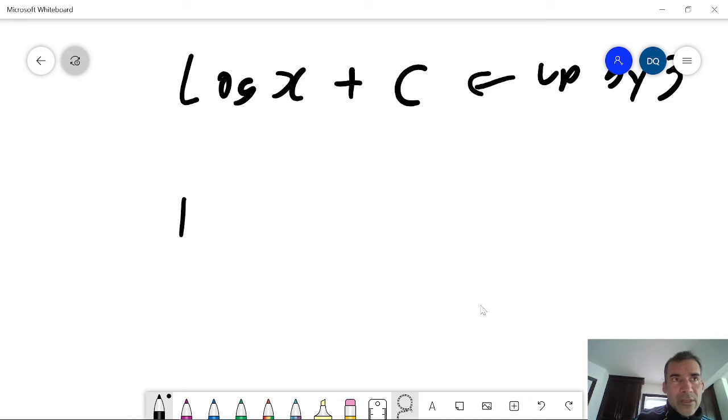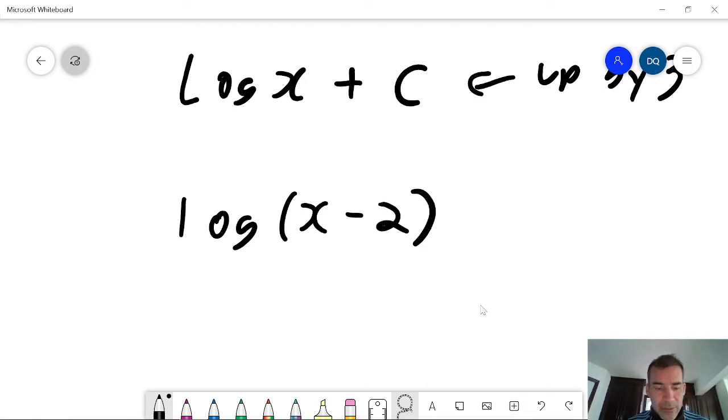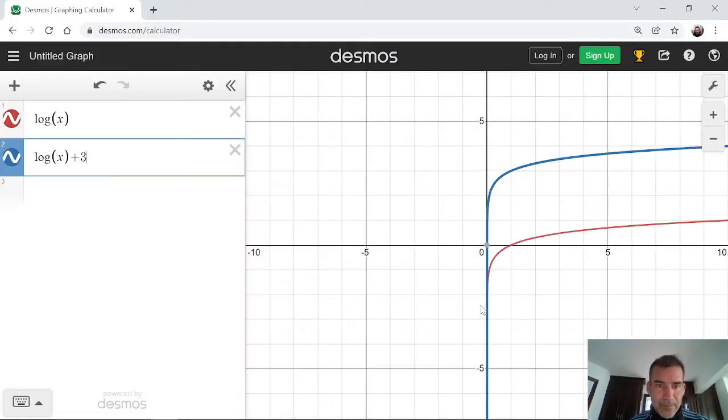What if we want to shift it horizontally? As usual, we've got to add or subtract a number inside the brackets directly to the variable. Watch what happens when I subtract 2. Now notice this is inside the brackets, though not outside.